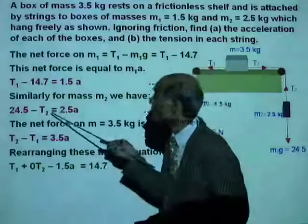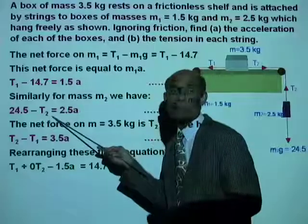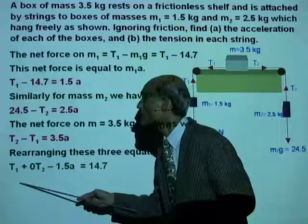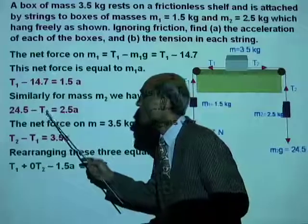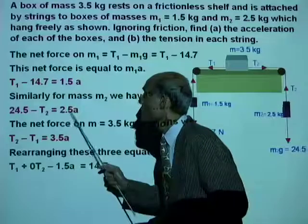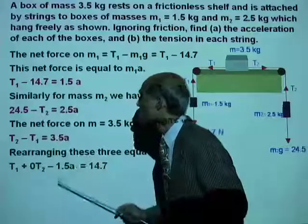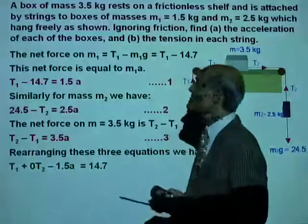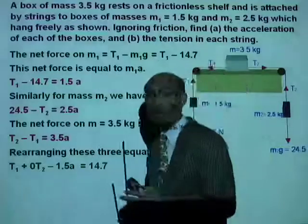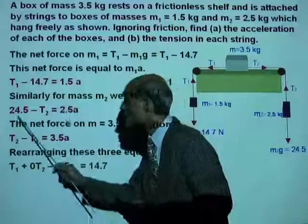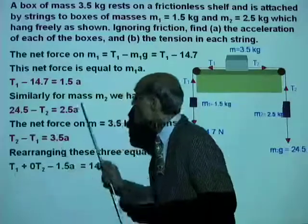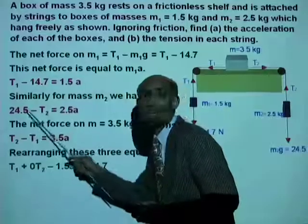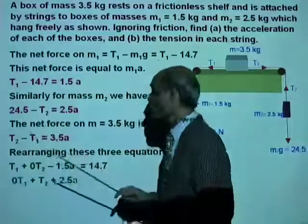In other words, we write the variables all on one side, and the number to the right side. I hope you understand that equation. T1 plus 0T2 minus 1.5A equal to 14.7. How will you write this equation? There is no T1 there, so there will be a 0T1, minus T2, minus 2.5A, equal to negative 24.5. Or you can write it like this: 0T1 plus T2 plus 2.5A equal to 24.5.